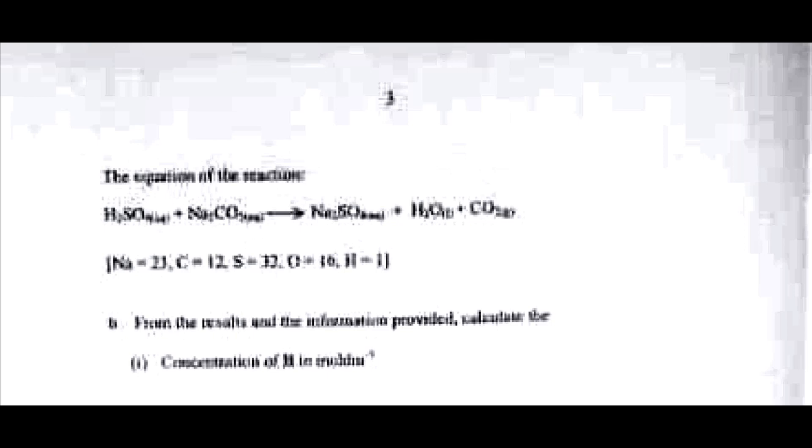We are told the equation of the reaction is: H₂SO₄ + Na₂CO₃ → Na₂SO₄ + H₂O + CO₂. We are given the relative atomic masses of the elements. From the results, we are asked to calculate the concentration of B in moles per dm³. We are given the concentration of A as 0.04 moles per dm³. We were not given the mass of B dissolved, but we can use the concentration of A with the titration formula to find the concentration of B.